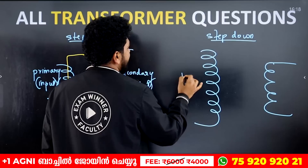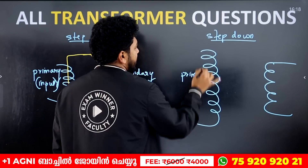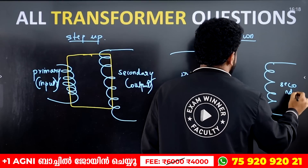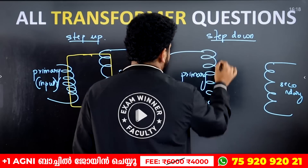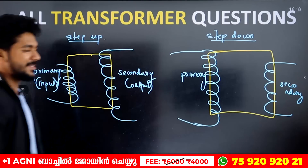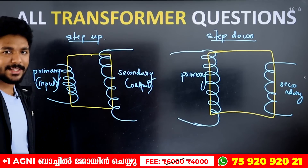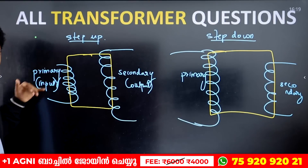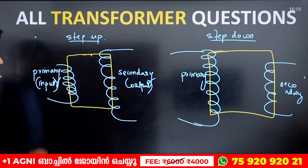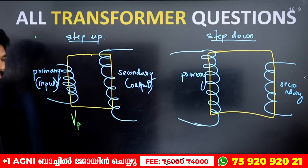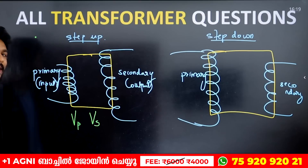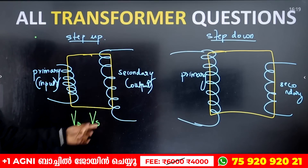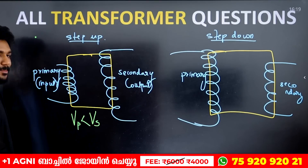What is the primary input voltage? When we call it an input, the voltage is the key — input and output. The voltage is the key. So output voltage will be greater when the turns are greater.